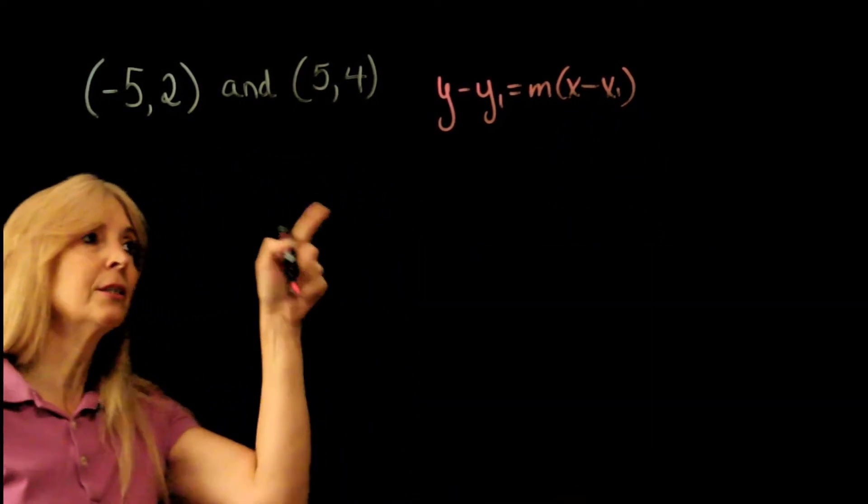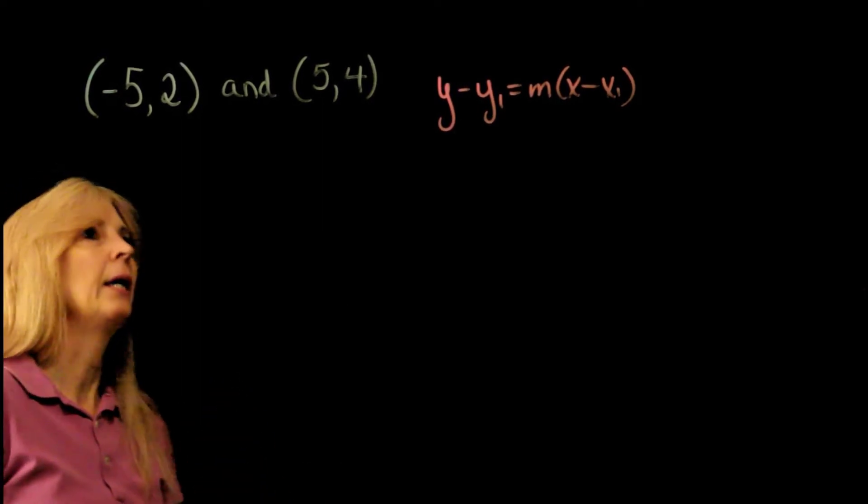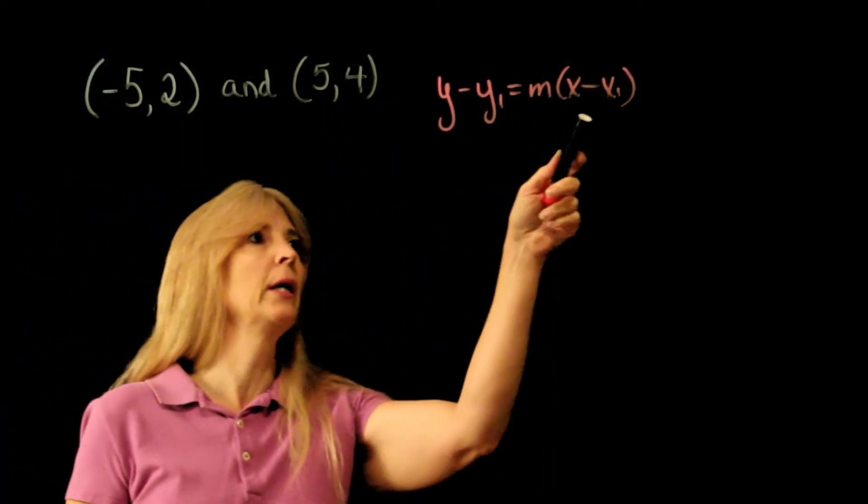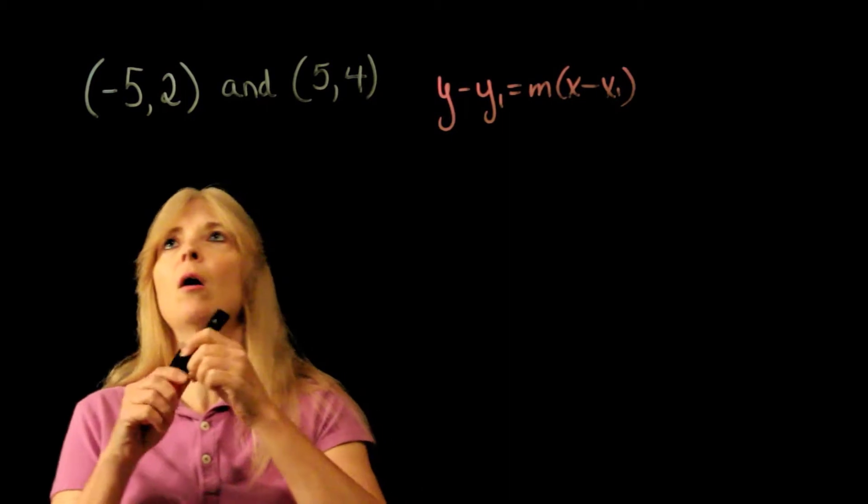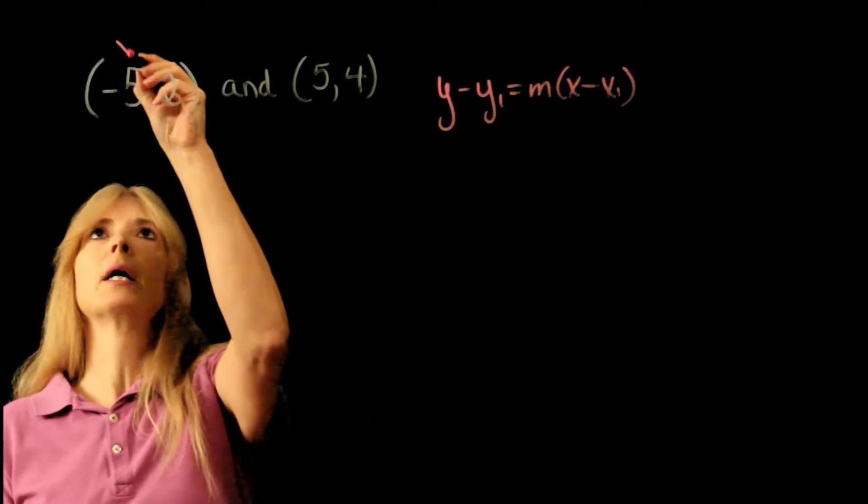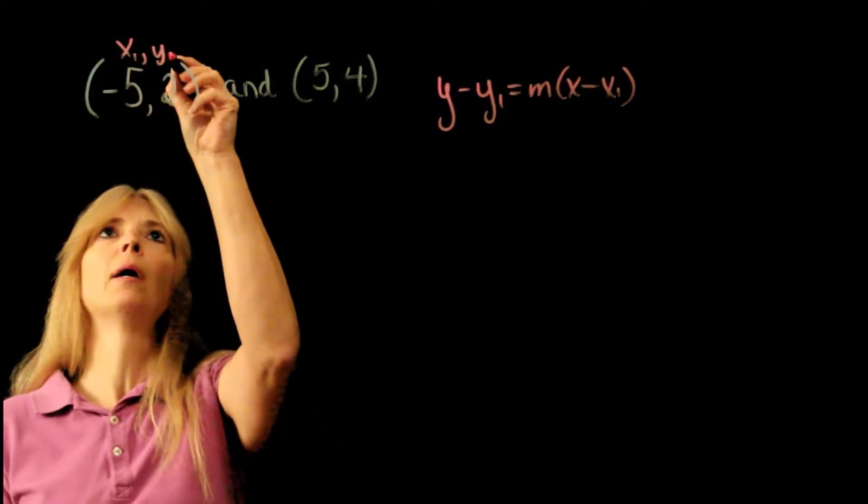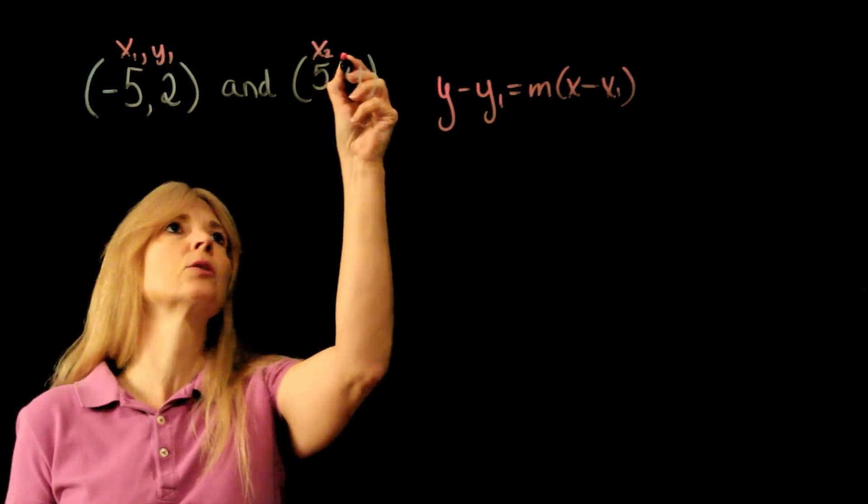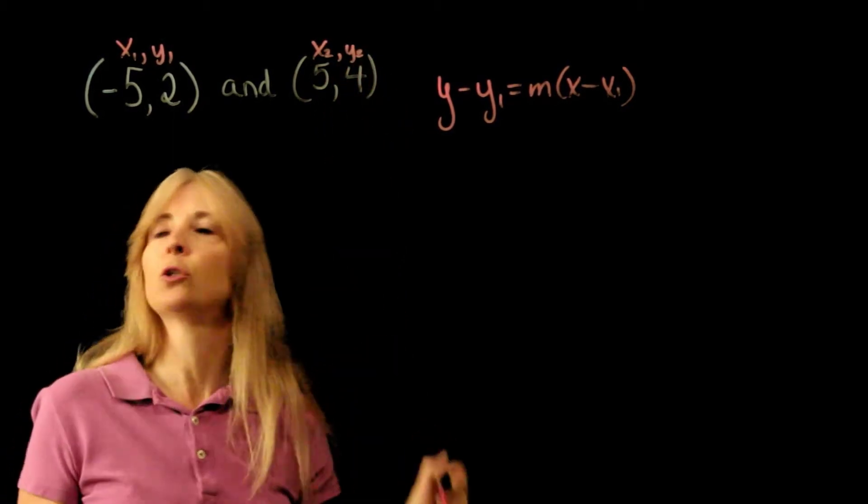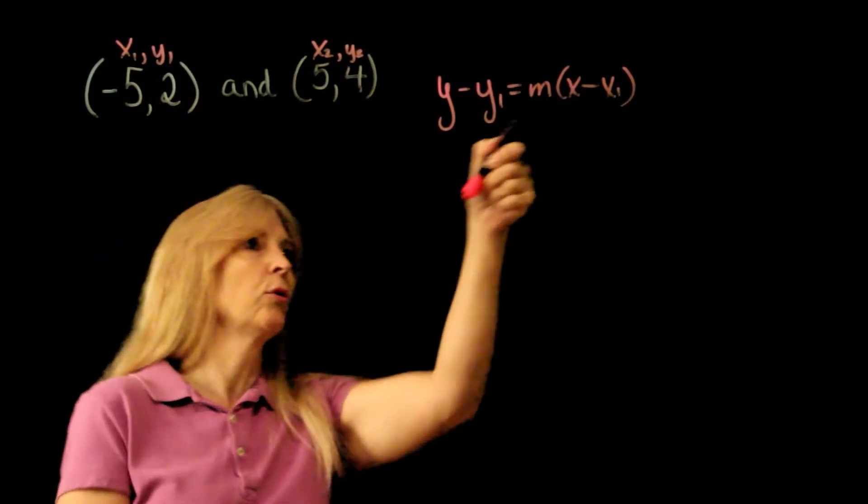With this formula, I could plug in either point. In other words, I could call this point x1, y1, and this point x2, y2. But I don't know the slope.